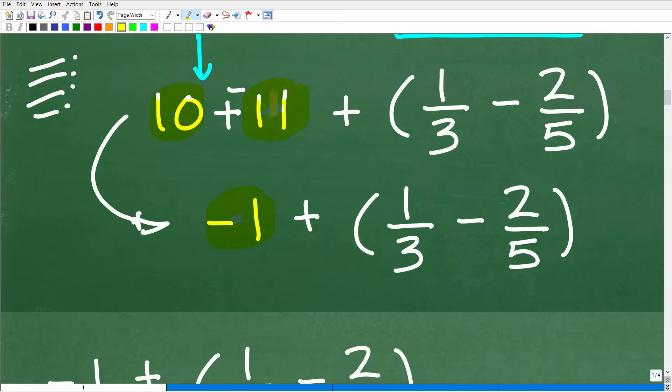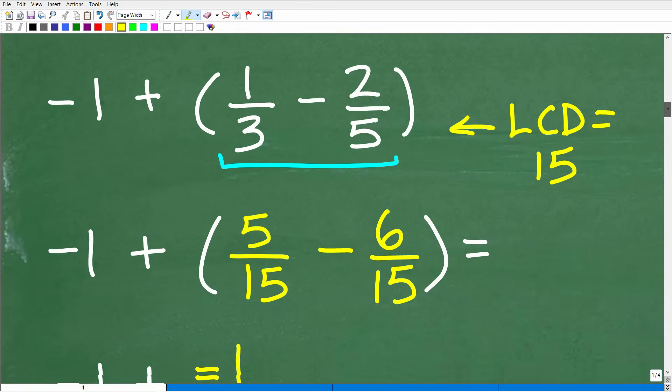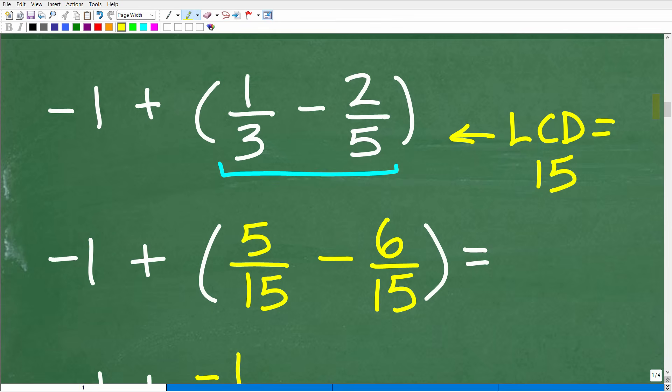So now we need to figure out what one third minus two fifths is equal to. So we get to deal with fractions now. Anytime you're trying to add or subtract fractions, you have to have those denominators the same. And you can see, we do not have common denominators. So we have to find the common denominators. And this is going to be 15. The lowest common denominator is 15.